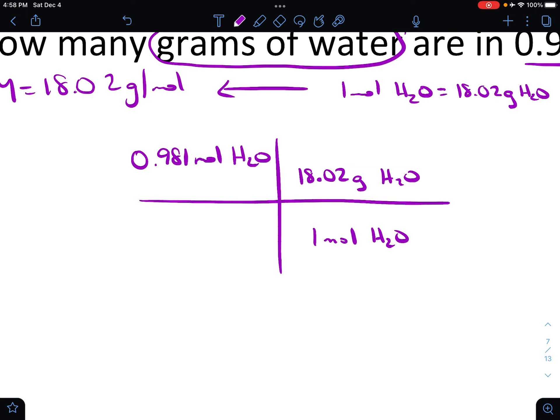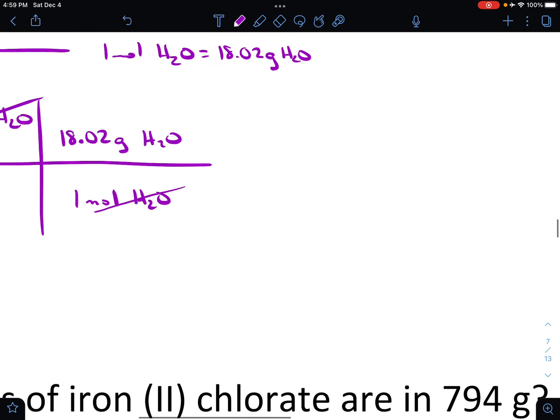That's just our equivalent statement there. If we look, moles cancel and we're ready to calculate. So we're going to take 0.981 and multiply that by 18.02, and we're going to have our answer. This time we're actually going to have some decimals, so we're going to say 17.68 grams of H2O.